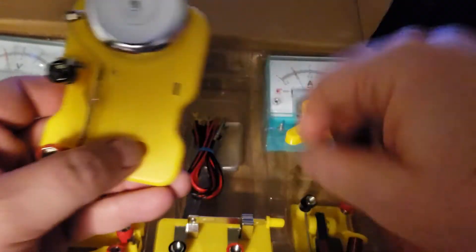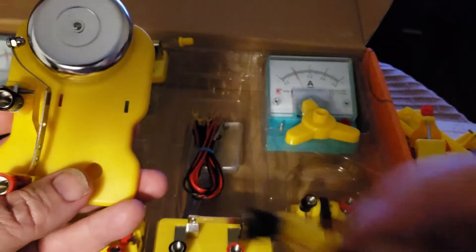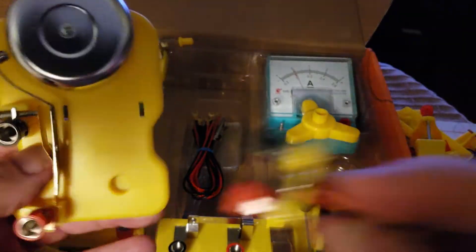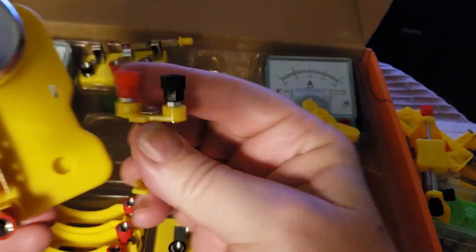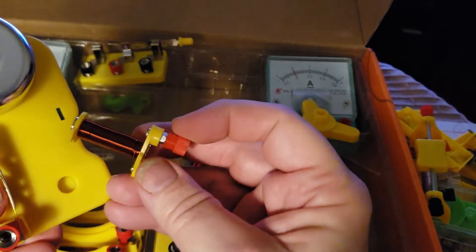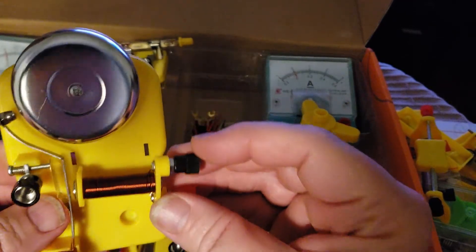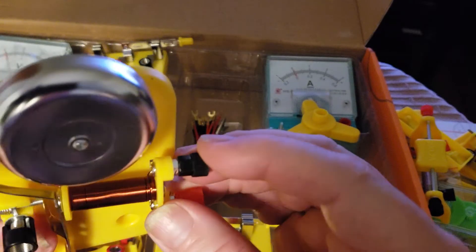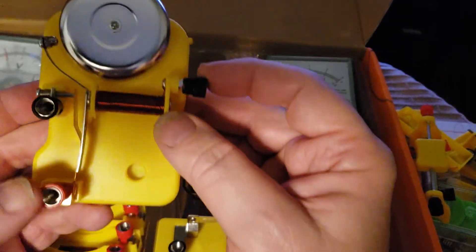I guess the final experiment is you make a solenoid bell. Here's a solenoid already wound. So I take the fun out of it by winding it for you. And this mounts in here and I guess you make a circuit.